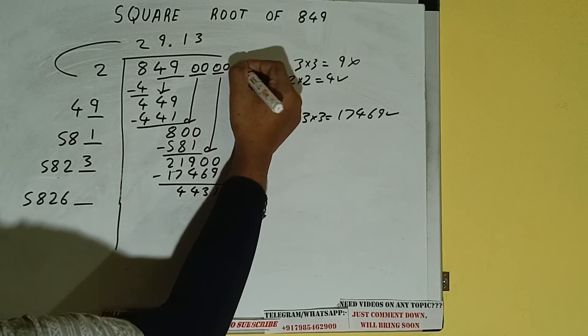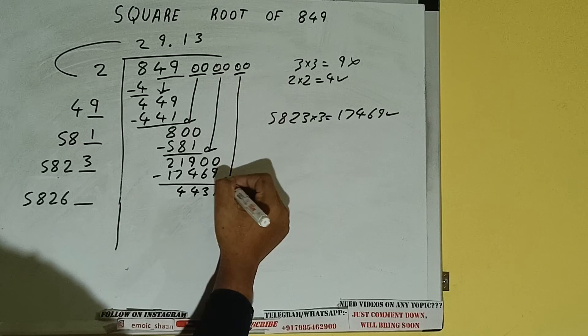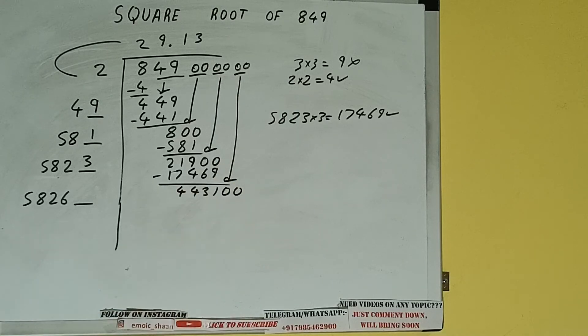This number we need to make it big. Bring the next pair of zeros down and it will be 443100. Now compare this 58 with this 443. 58 eight times is 464, so we cannot try 8 times.